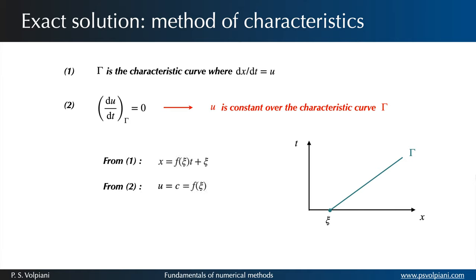we can write that U equals F of C on that characteristic. Therefore, the trajectory of that characteristic is x equals F of C times T plus C.